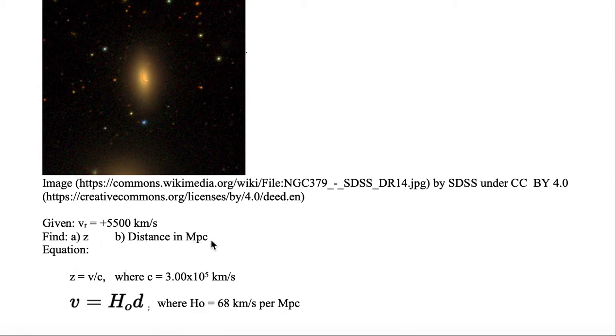As for finding distance in megaparsecs, we're going to use the Hubble-Lemaître law where v, the recessional velocity, is equal to H₀, the Hubble constant, times d distance. In this particular example, we have the Hubble constant assigned as 68 km per second per megaparsec.